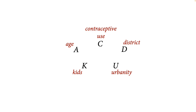Lots of people request more advice about how to draw DAGs. My response is you need domain expertise, but there are some heuristics as well. Let me show you how I would go about drawing a DAG with just these variables. The variables we're nominating so far: contraceptive use as our outcome, age of the woman, how many living kids she has, urbanity — does she live in an urban area or not — and then the district, which is an index variable representing unmeasured things about districts that may affect all the women and families within them.